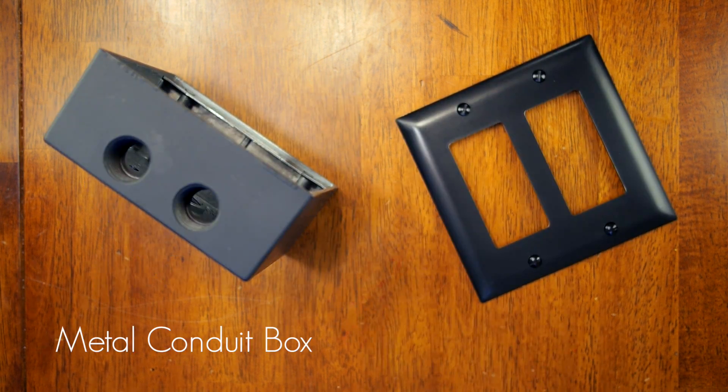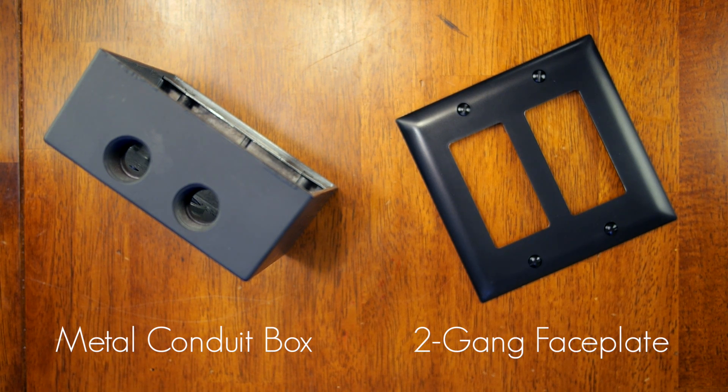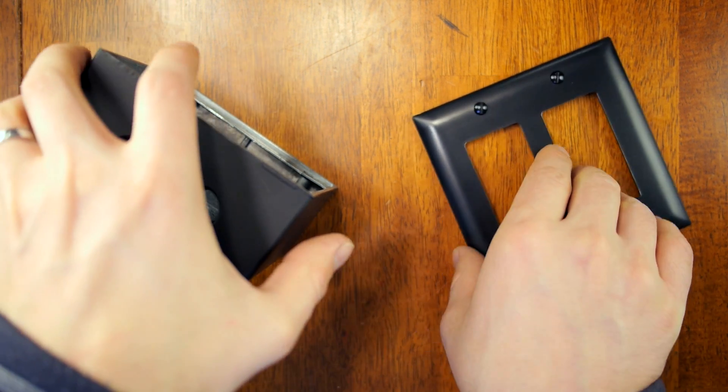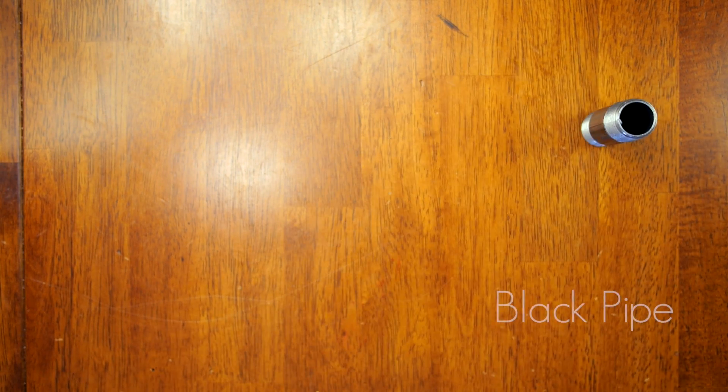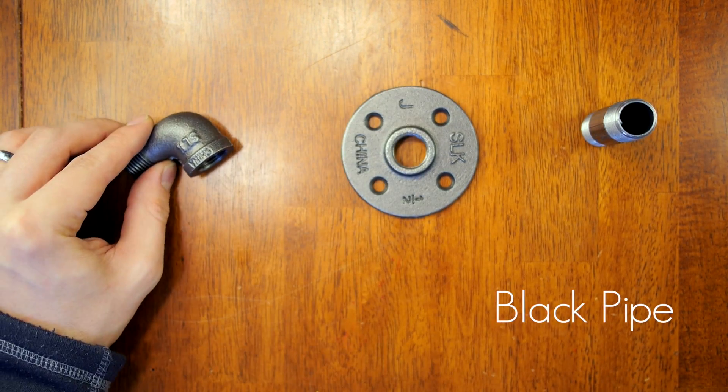I find that a metal conduit box creates a very clean enclosure and it's nice because it can be painted to match its surroundings. I'll be using black pipe to create a stand for the box.